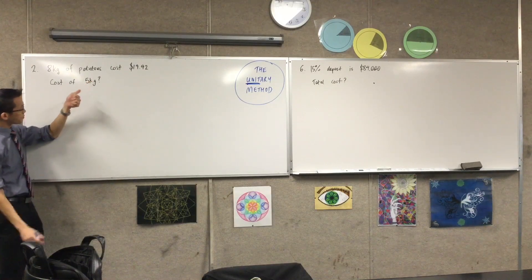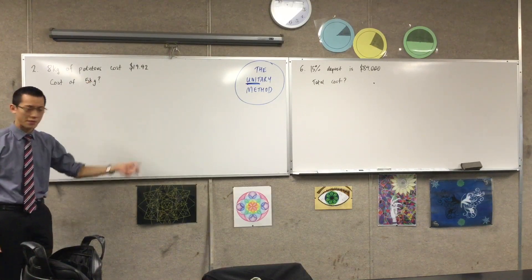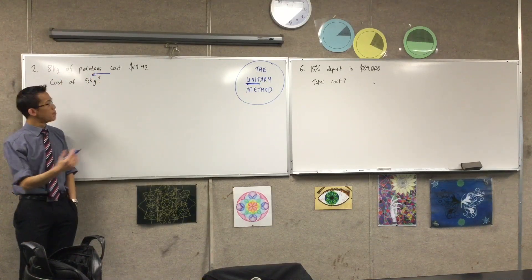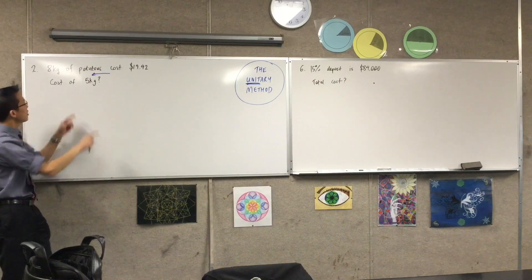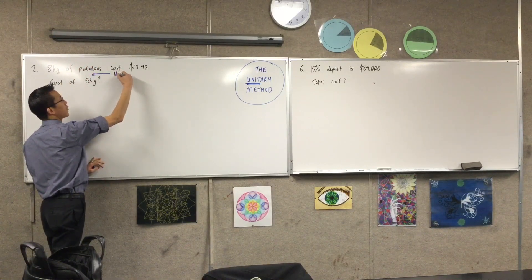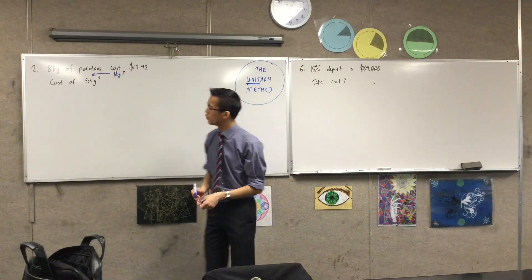So as an example here, if we want to work out the cost of five kilos, there's kind of this intermediate question here that you can answer before you get to five kilos to help you understand eight kilos, which is, well, before you get to five, just think about one. Just think about one unit.